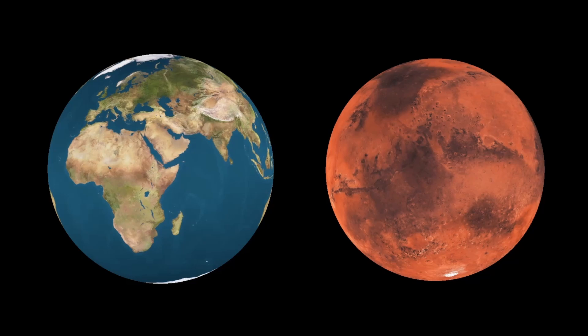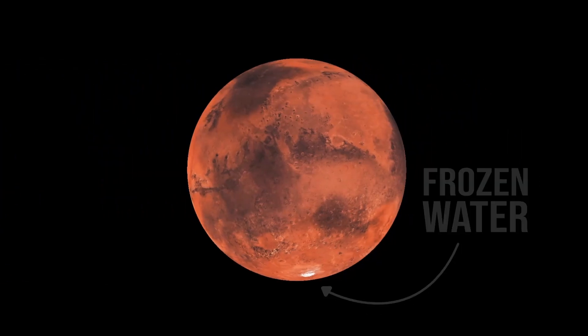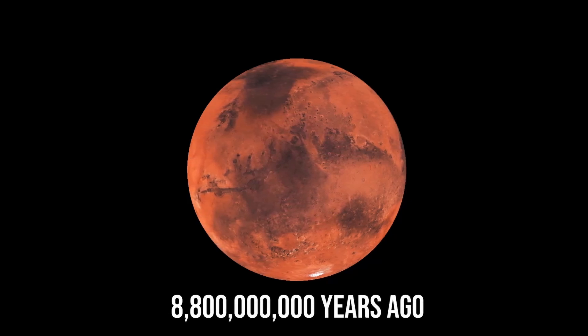However, unlike Earth, Mars water exists only in frozen form. But scientists believe that billions of years ago, liquid water was present on Mars, forming rivers, lakes and even oceans.